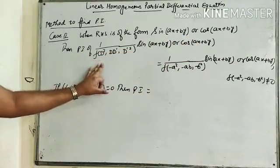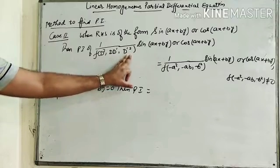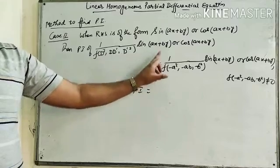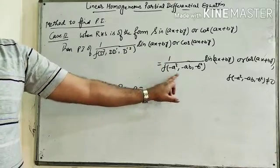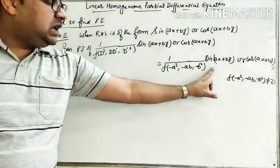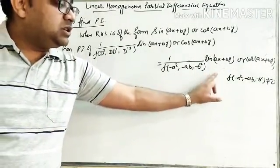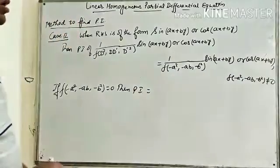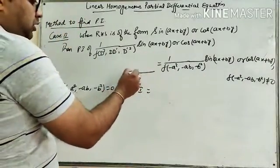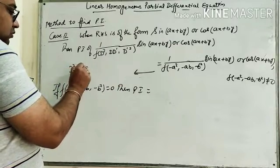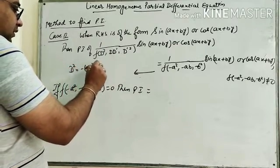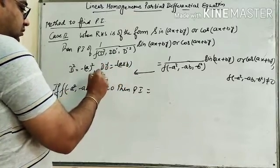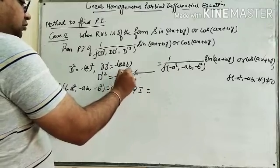Then PI = 1 / f(D², DD', D'²) of sin(Ax + By) or cos(Ax + By) equals 1 / f(−A², −AB, −B²) · sin(Ax + By) or cos(Ax + By), provided f(−A², −AB, −B²) ≠ 0. This means we substitute D² = −A², DD' = −AB, and D'² = −B².